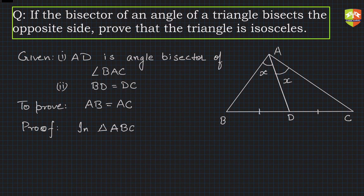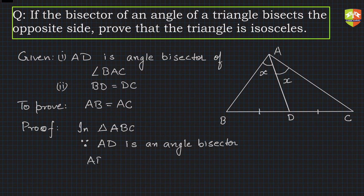Since AD is an angle bisector, an internal angle bisector, hence we know that the ratio divides the opposite side in the ratio of the adjacent sides. So AB upon AC is equal to BD upon DC.